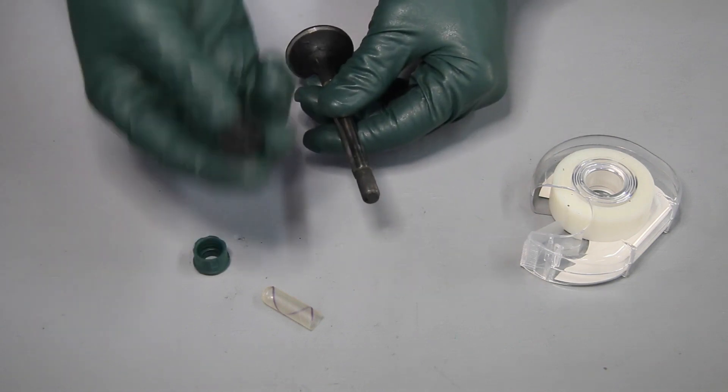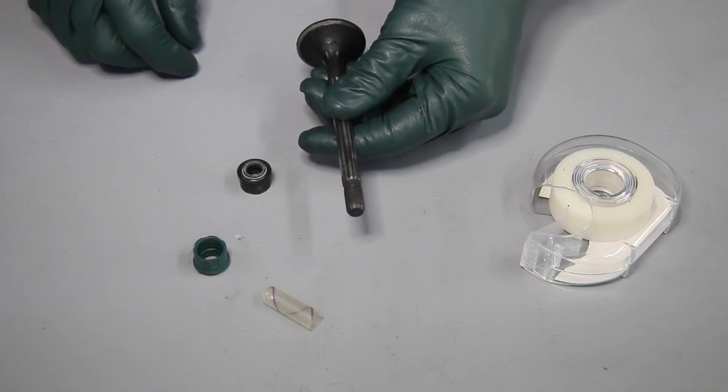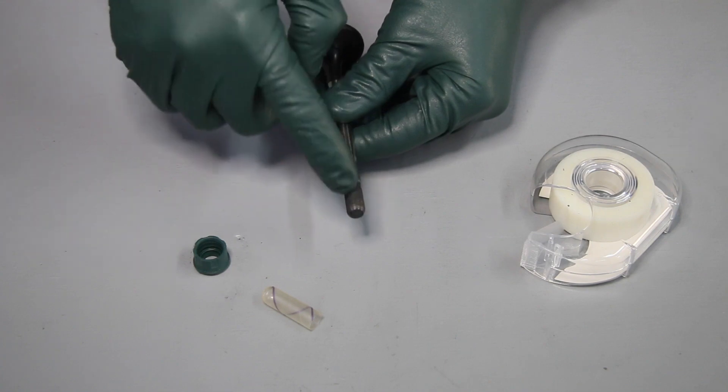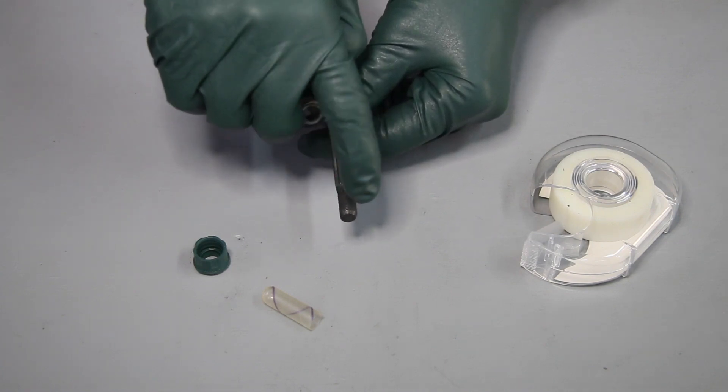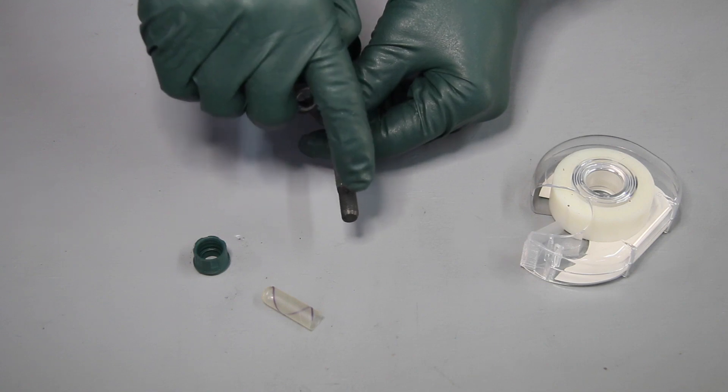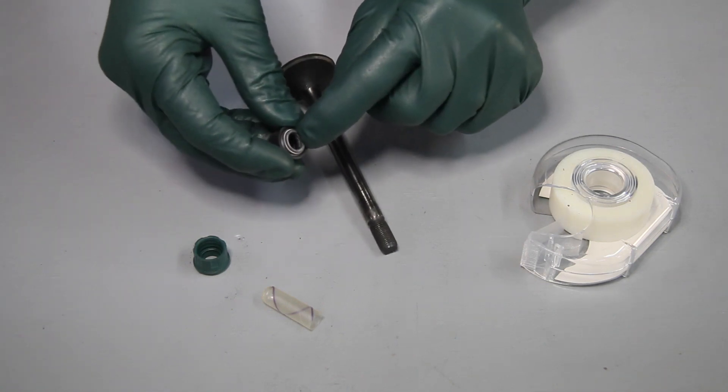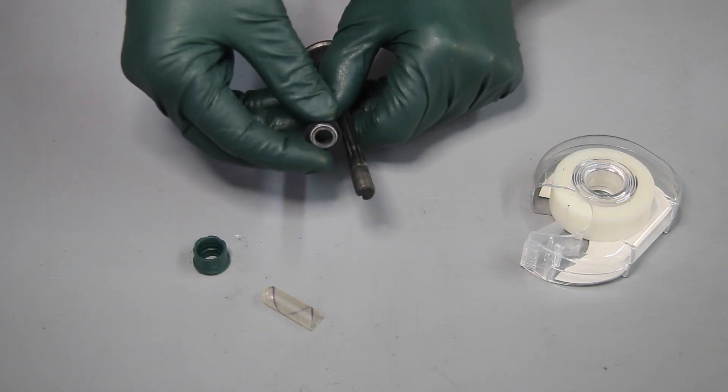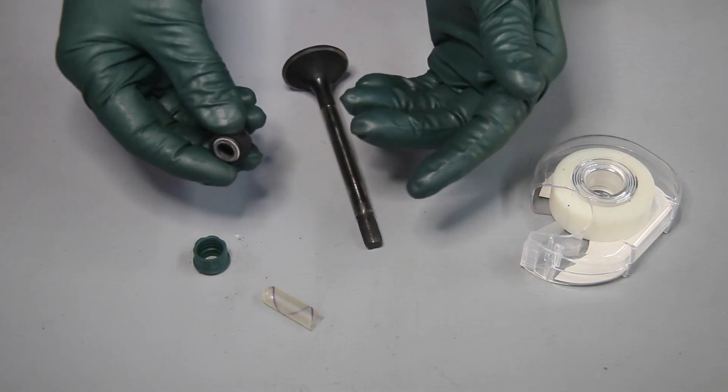Now if you were to take the seal and shove it on over the top of those threads unprotected, what do you think might happen to the seal? You could also have another gasoline engine type valve that maybe has some sharp edges for the valve stem keepers, and you want to protect the lip. This critical lip of the seal has to be protected when installing it on over the end of the valve stem or you can damage the lip and shorten the life of the seal.